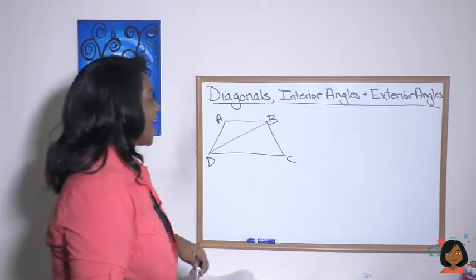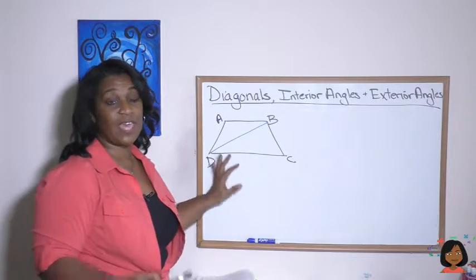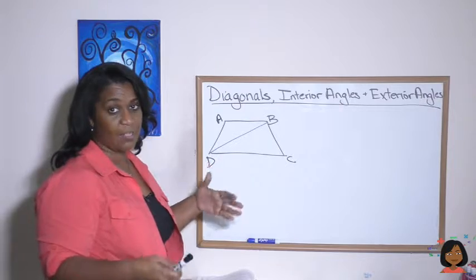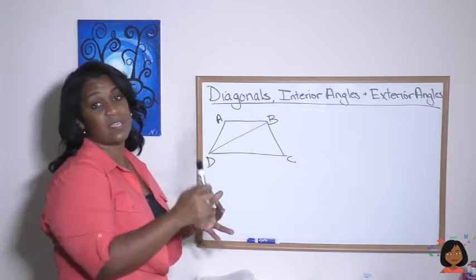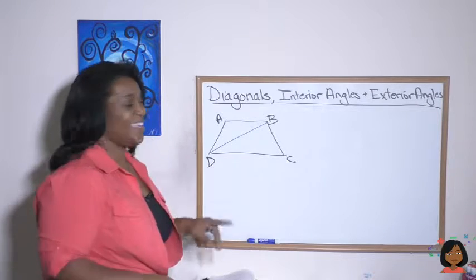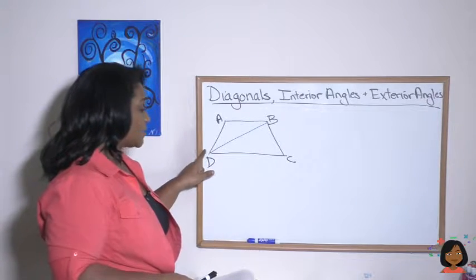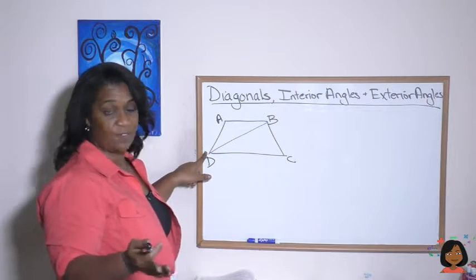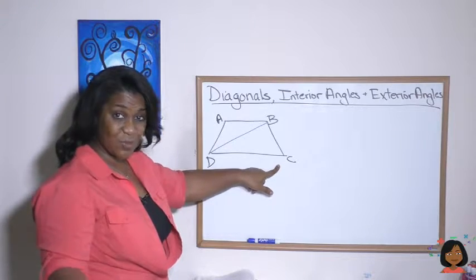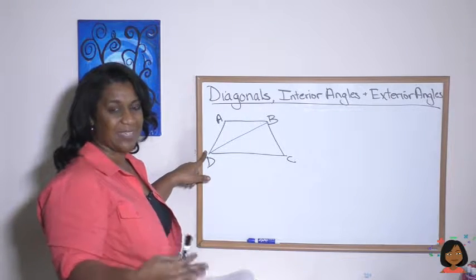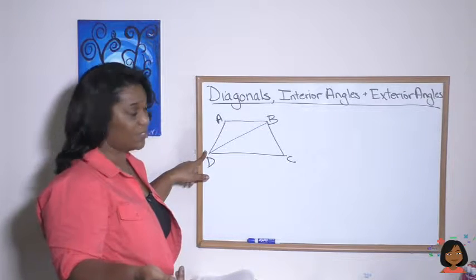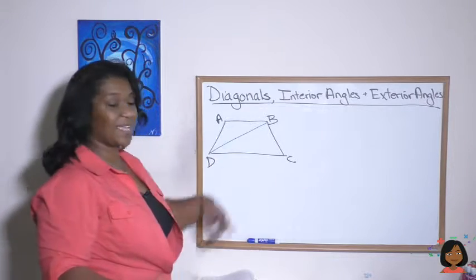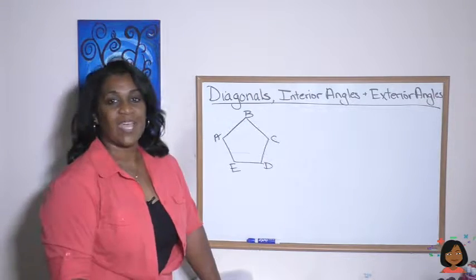Let's start with diagonals. Diagonals have to do with anything that's a polygon — something with more sides than a triangle, like quadrilaterals, pentagons, hexagons. Diagonals connect non-adjacent vertices. Adjacent means the ones next to it. So a diagonal is any segment that connects the non-adjacent vertices, like from point D to point B.